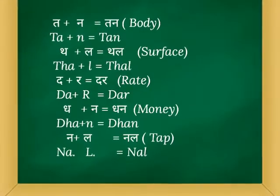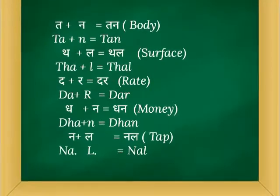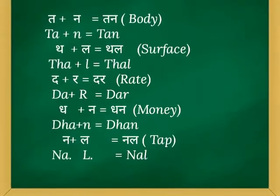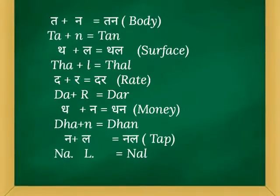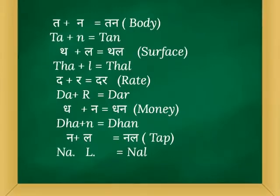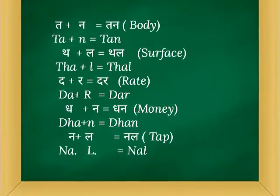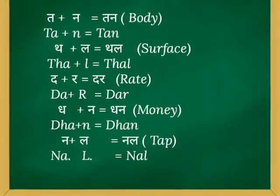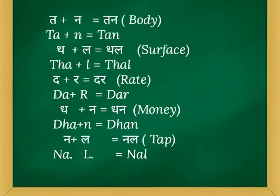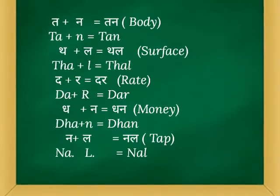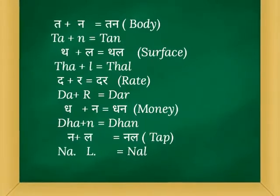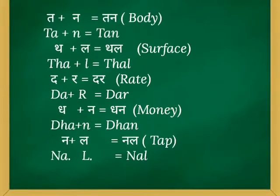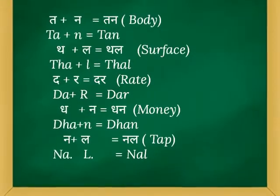The second letter is 'tha' combined with 'la' to make 'thal', which means surface. The third letter is 'da' combined with 'ra' to make 'dar', which means rate. The fourth letter is 'tha' combined with 'na' to make 'dhan', which means money.